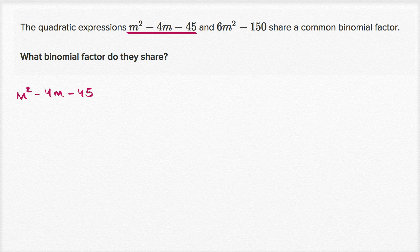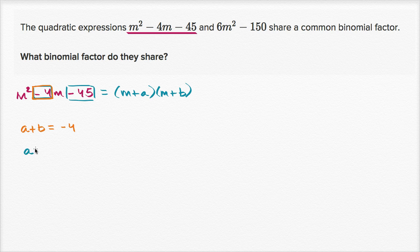So when you're factoring a quadratic expression like this, where the coefficient on the second degree term is one, we could factor it as being equal to m plus a times m plus b, where a plus b is going to be equal to this coefficient, and a times b is going to be equal to this coefficient. So a plus b needs to be equal to negative 4, and a times b needs to be equal to negative 45.